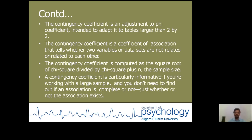The contingency coefficient is an adjustment to phi coefficient intended to adapt to phi coefficient. It is a coefficient of association that tells whether two variables or data sets are related or not related to each other. The contingency coefficient is computed as the square root of chi-square divided by chi-square plus n, where n is the sample size. It is particularly informative when working with a large sample and you only need to determine whether or not an association exists.